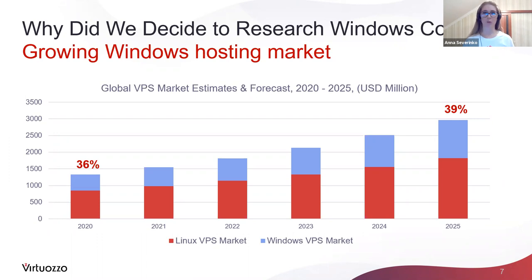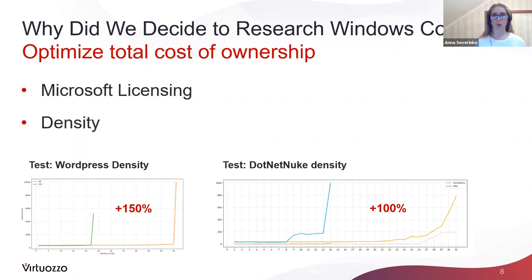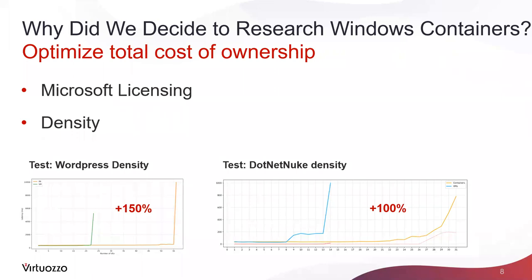You might say we have Windows virtual machines for that. But we understand that total cost of ownership is key for our customer success, and this brings us to the second reason: optimization of TCO. Microsoft has two types of containers: process-isolated containers and Hyper-V isolated containers. Hyper-V isolated containers are actually lightweight Hyper-V VMs optimized for container use cases, while process-isolated containers are similar to Linux containers. We have chosen process-isolated containers to optimize total cost of ownership.